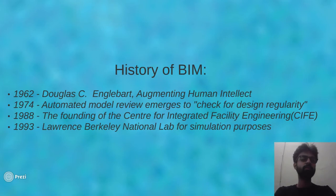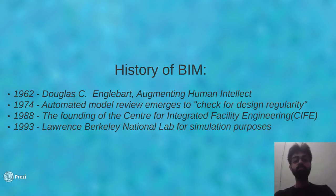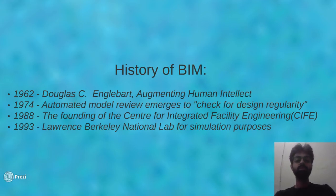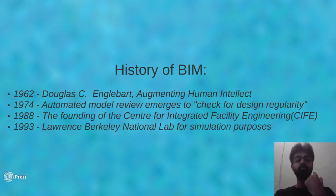Looking at a short history of BIM: in 1962, Douglas C. Engelbart wrote the paper 'Augmented Human Intellect.' Then there was a paper for Automated Model Review, which emerged to check for design regularity, followed by the founding of the Center for Integrated Facility Engineering and Lawrence Berkeley National Lab for simulating purposes. All of these papers and research somehow directed towards the term we are presently using — that is BIM.